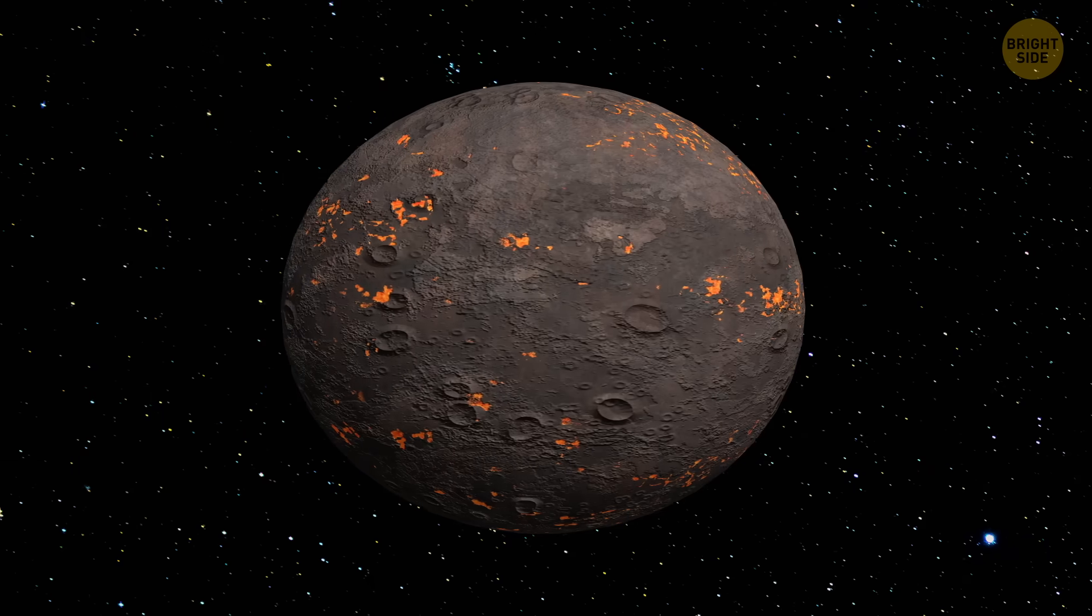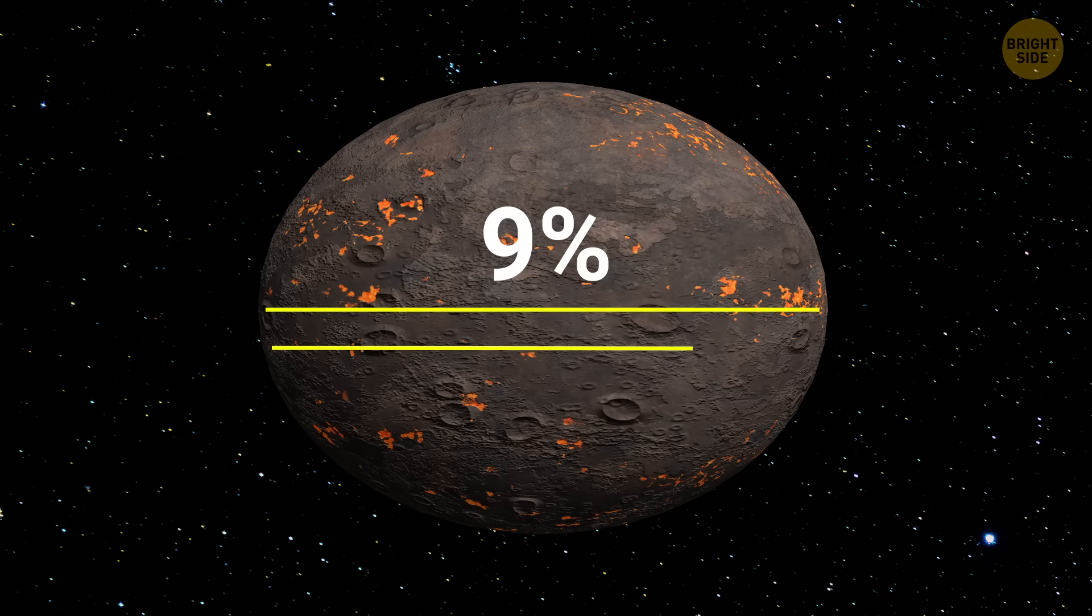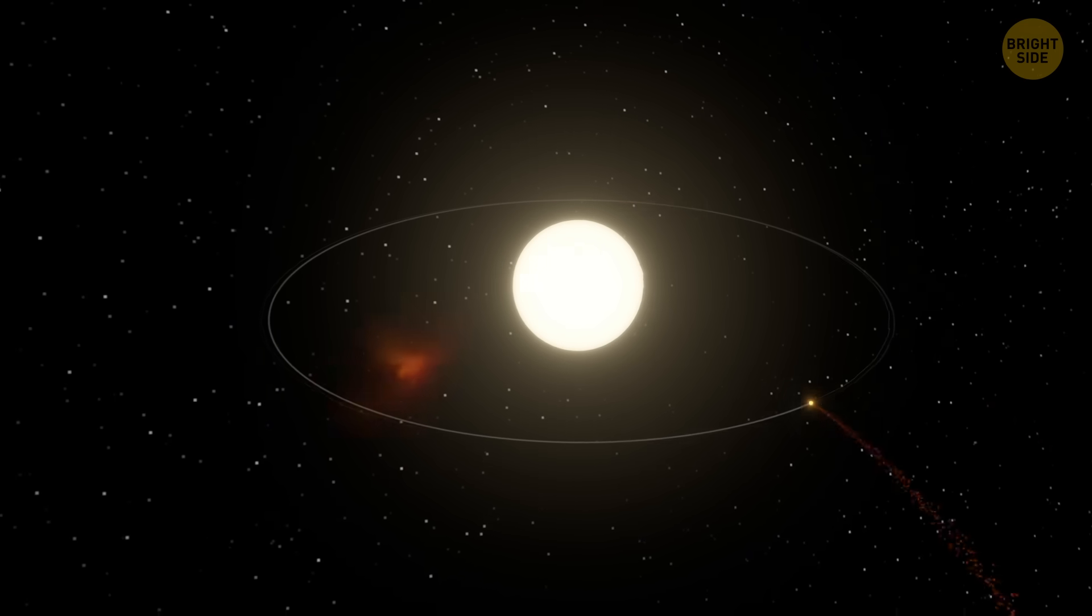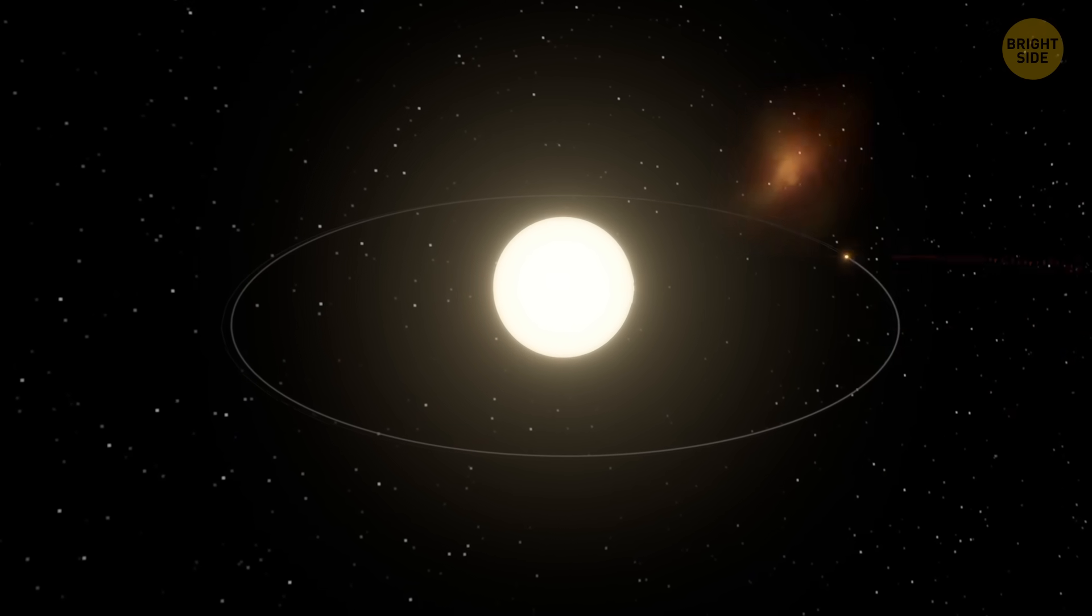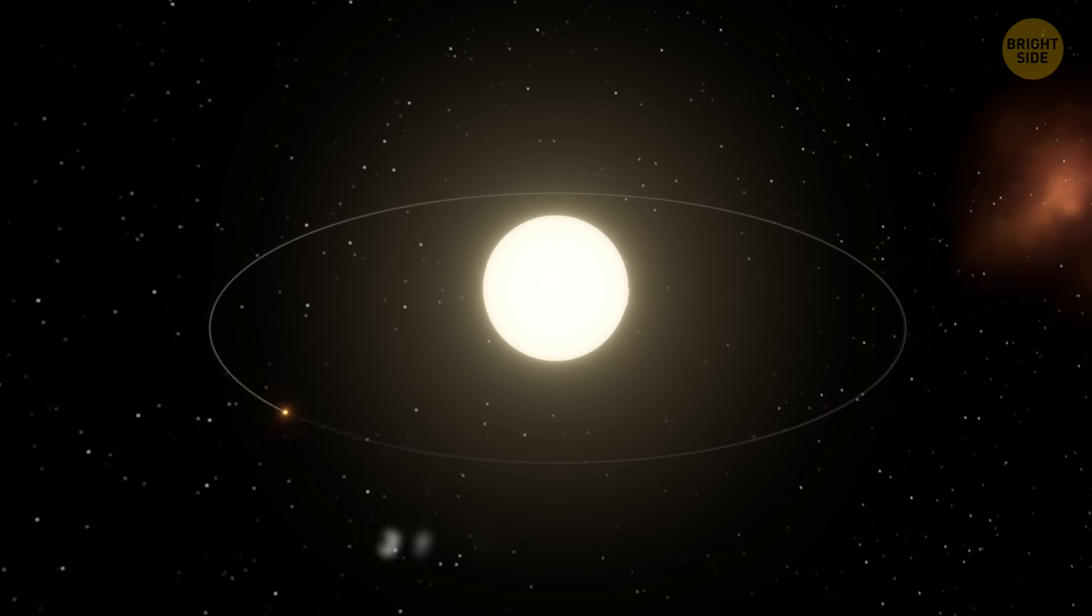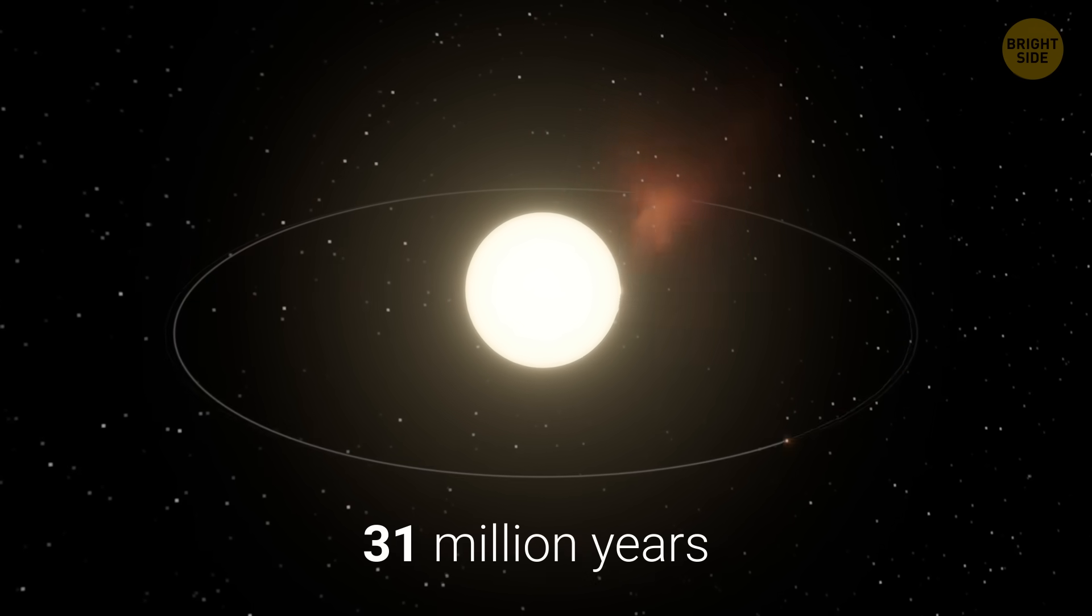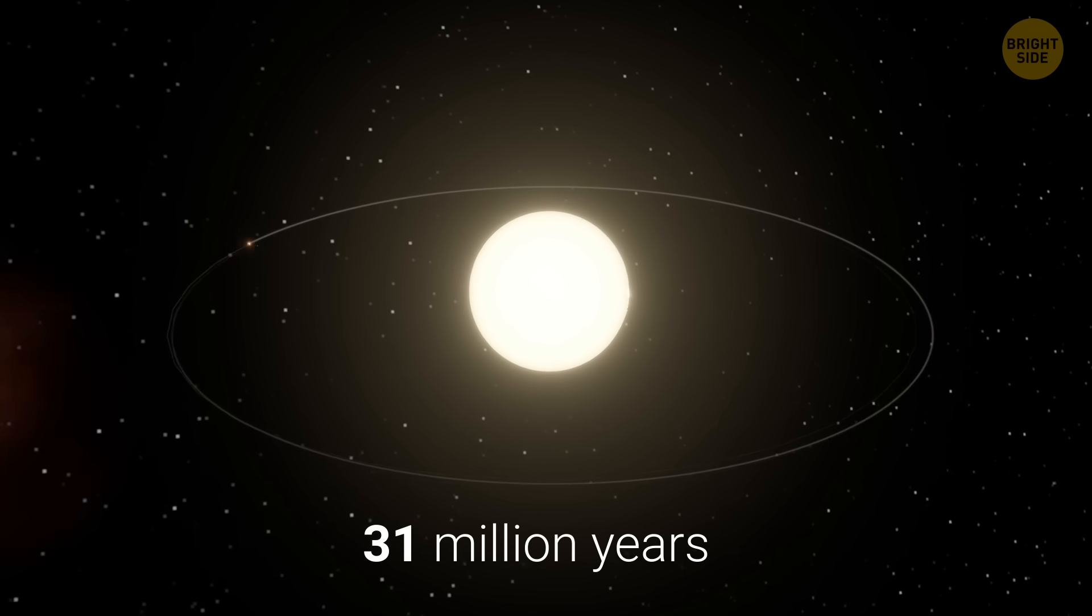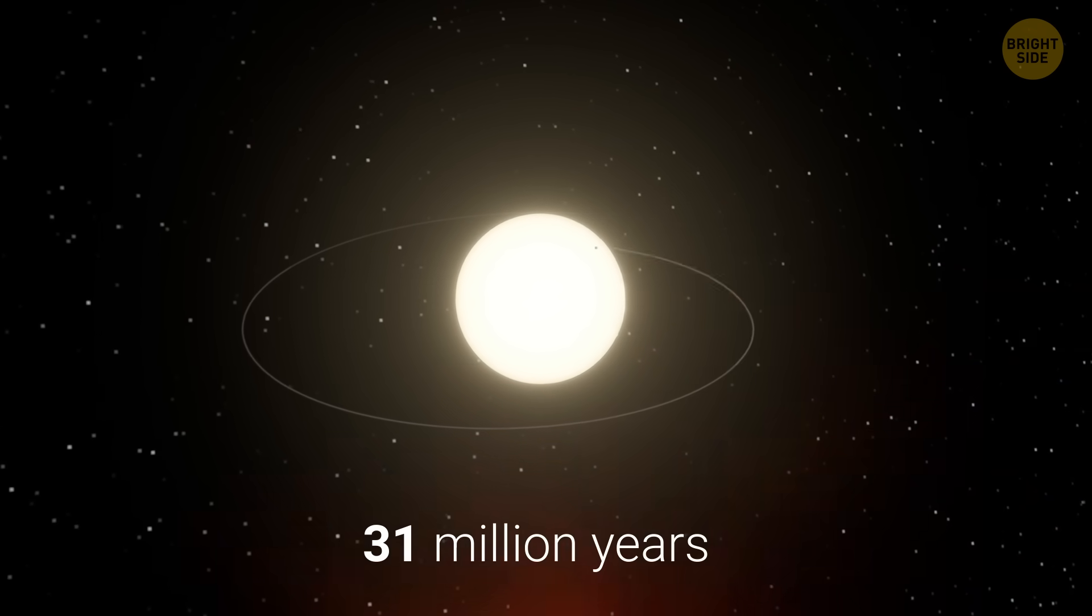The planet is also likely tidally squished, with its shortest axis being about 9% shorter than its longest, stretched like Play-Doh. Plus, scientists calculated how long before its orbit starts collapsing, and it's only 31 million years. That's shorter than any other known USP planet. In cosmic terms, it's like a firework going off. Blink, and it's gone.